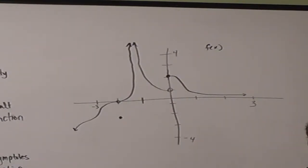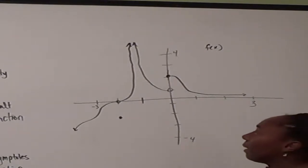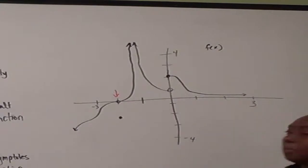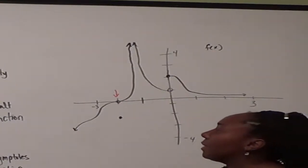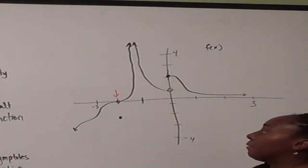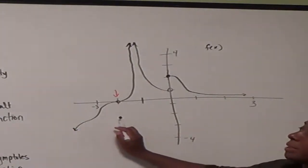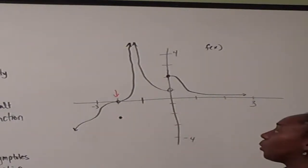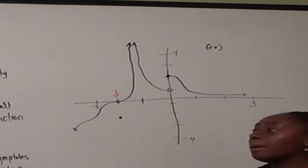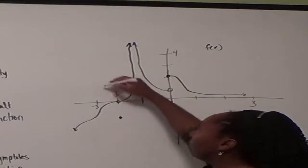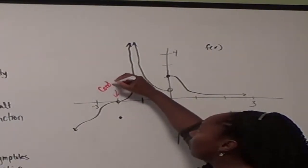There are three types of discontinuities that you would see. The first would be something like at the point x equals negative 2. If we look at our definition for continuity, the function is defined at the point and the limit exists. As we come in from both sides of negative 2, both of those are going to 0. But this would be a case where condition 3 fails.